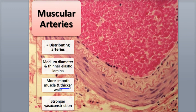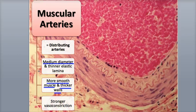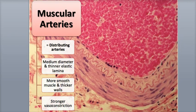Muscular arteries are thicker-walled arteries with a medium-sized diameter, having a tunica media with large quantities of smooth muscle fibers but fewer elastic fibers compared to elastic arteries. They range in size from the diameter of a pencil to as narrow as a string, with their thicker wall making up about one-quarter of their diameter. They have a thicker internal elastic lamina,